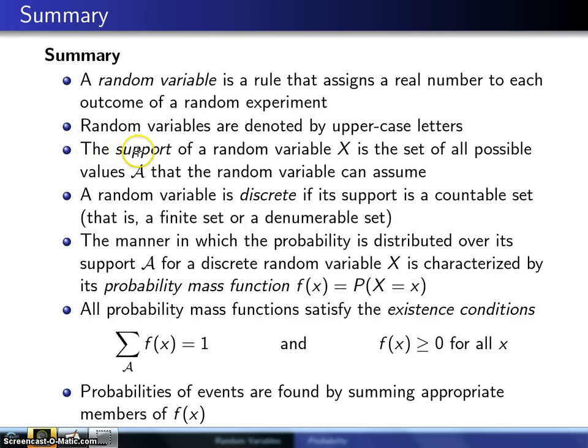Third, the support of a random variable x is the set of all possible values, script A, that the random variable can assume. This notation right here, the script A, is not universal. That's used here in this class, but not necessarily used everywhere else.